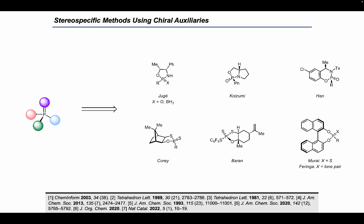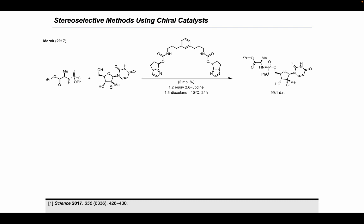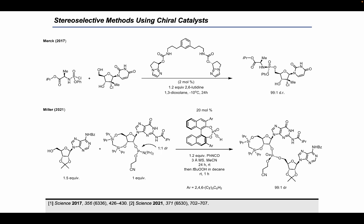There have been many impressive advances in the development of catalytic approaches for accessing stereogenic-at-phosphorus compounds. One example was reported in 2017 by Merck, in which a chiral bisamidazole catalyst was developed to catalyze the reaction of nucleosides with chlorophosphoramidates to assemble chiral phosphoramidate prodrugs with remarkably high levels of diastereoselectivity.